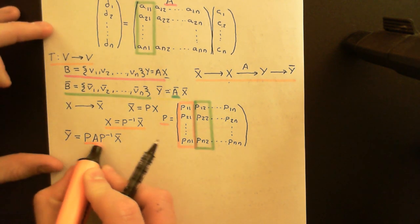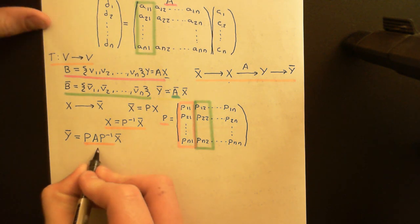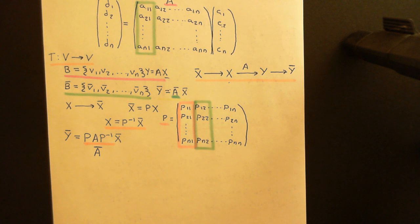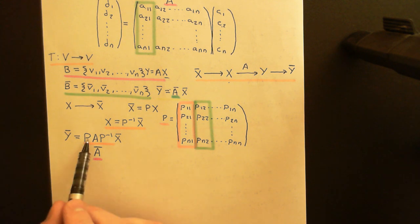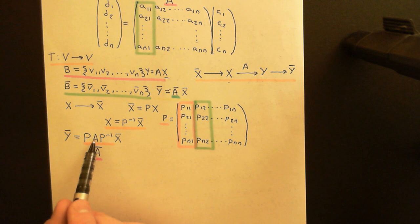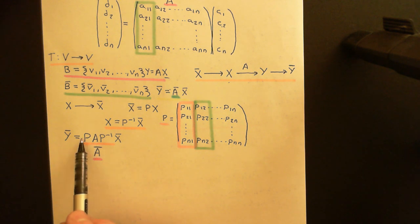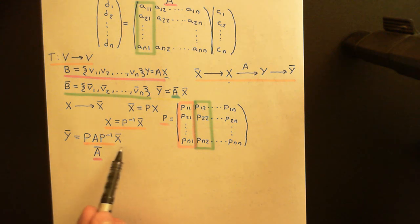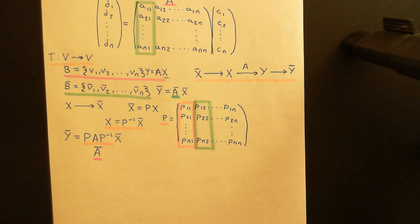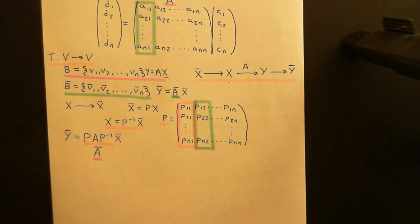This means that A-bar = P A P-inverse. This is the new matrix representation of the linear operator when using the barred basis rather than the unbarred basis. I just take matrix P, take its inverse, and use it to conjugate the matrix A. This makes sense because A is N×N, P is N×N, P-inverse is N×N, so multiplying three N×N matrices gives an N×N matrix A-bar, as expected.